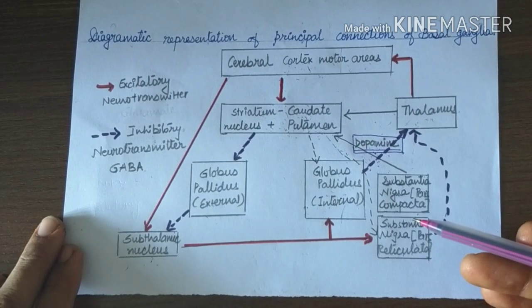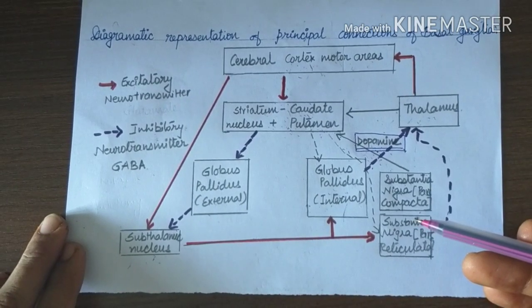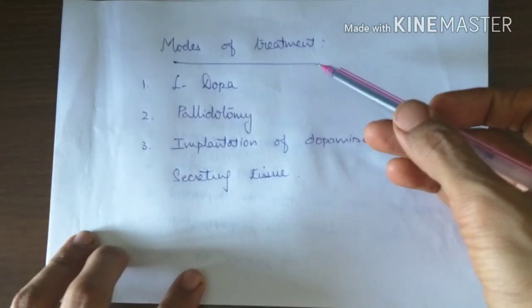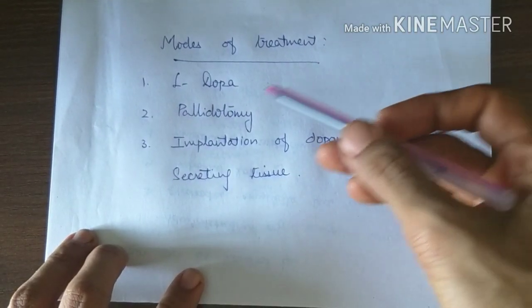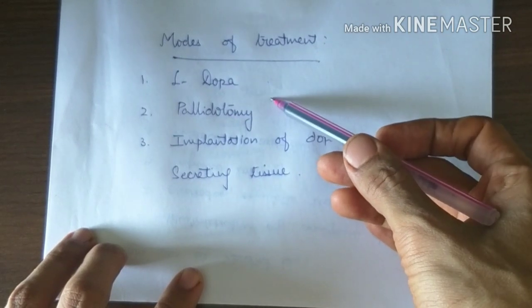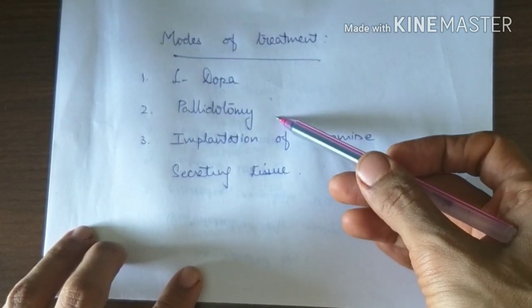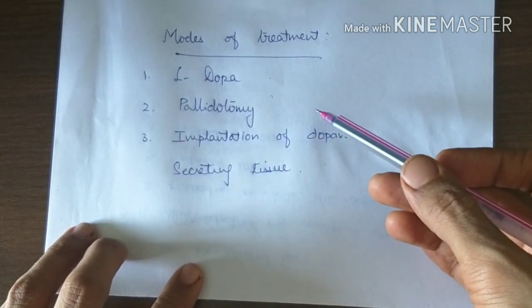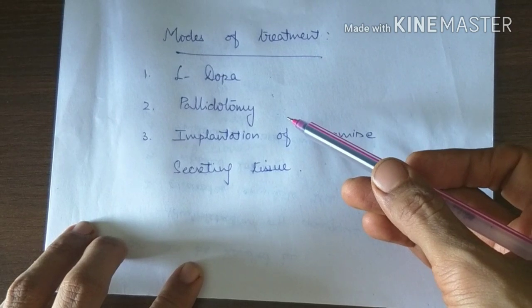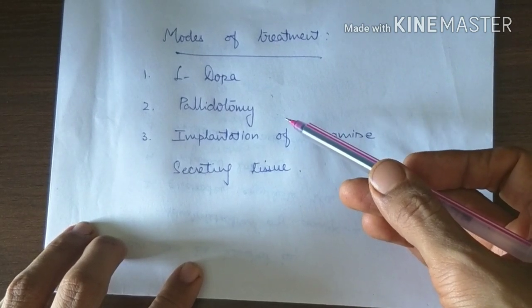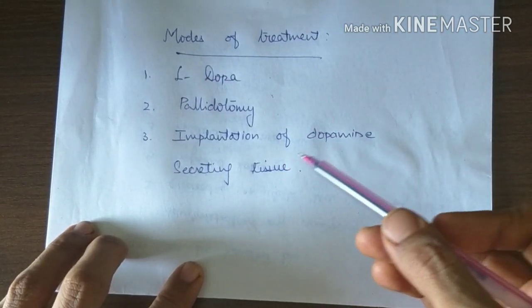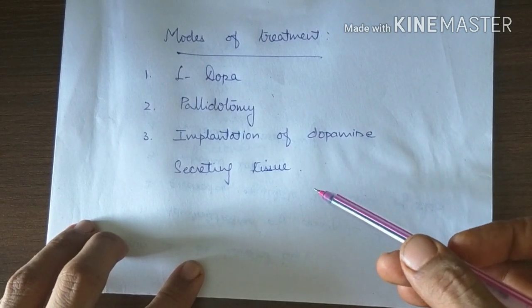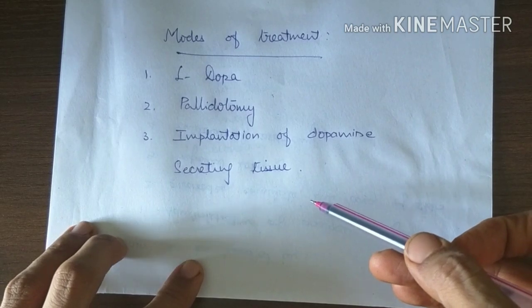Another mode of treatment is genetic therapy, which is under trial. So modes of treatment include levodopa, surgical treatment that is pallidotomy, electrodes implanted and attached with subcutaneous stimulator, and implantation of dopamine secreting tissues either in or near the basal ganglia. This is all about Parkinson's disease. Thank you.